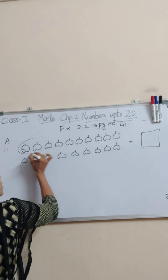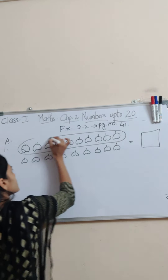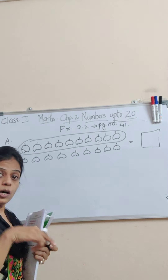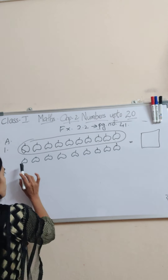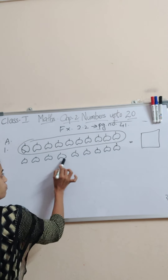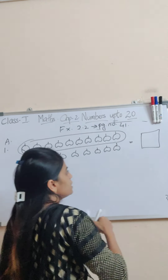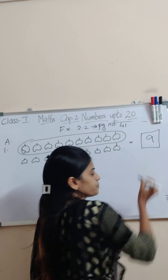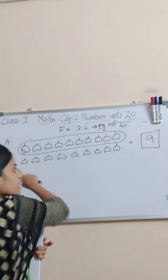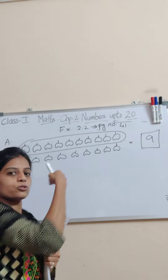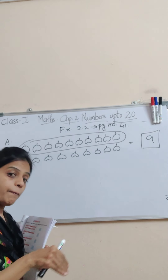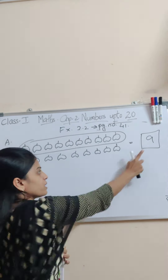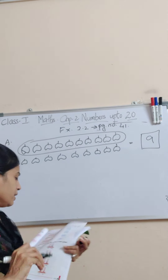Make a circle for the order of 10. Now count how many are left over: 1, 2, 3, 4, 5, 6, 7, 8, 9 — so write 9 in the box. Just make a group, leave the rest, then write the leftover. So apples left over are 6, and we write that in the box.